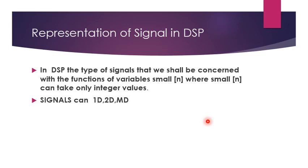A common confusion is that all continuous time signals are called analog signals, but not all analog signals are continuous time. If the independent variable is discretized but not the dependent variable, it is still an analog signal. Therefore, an analog signal can be either continuous time or discrete time.